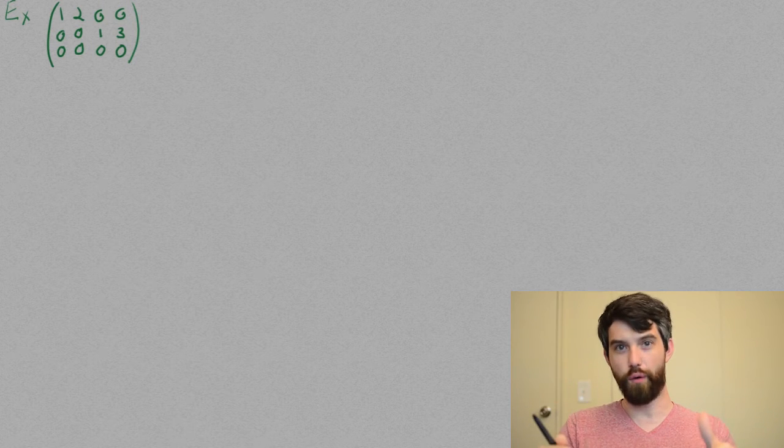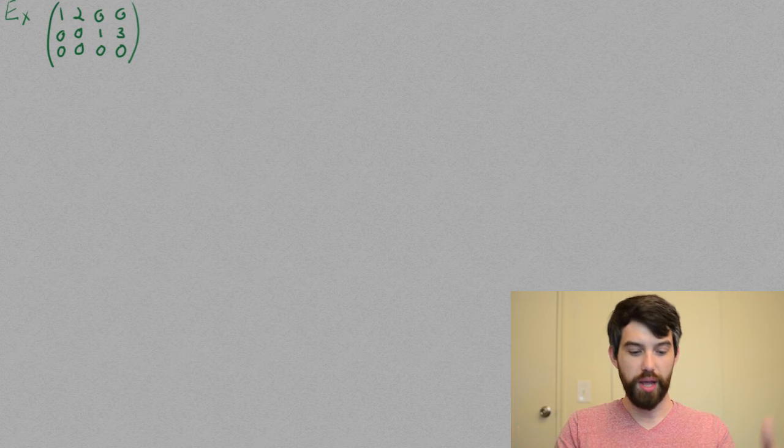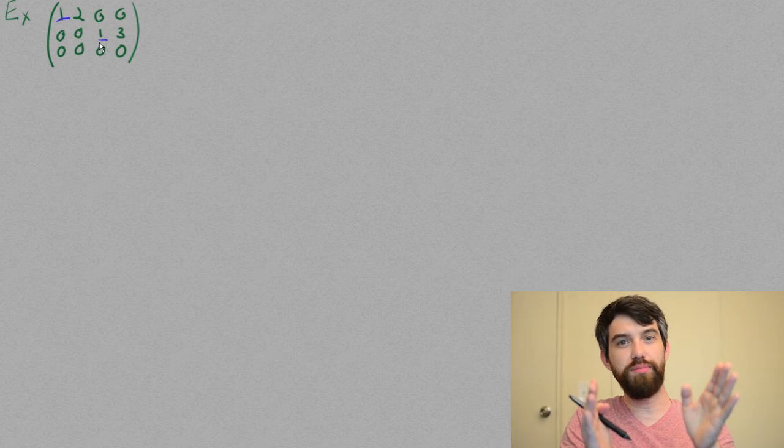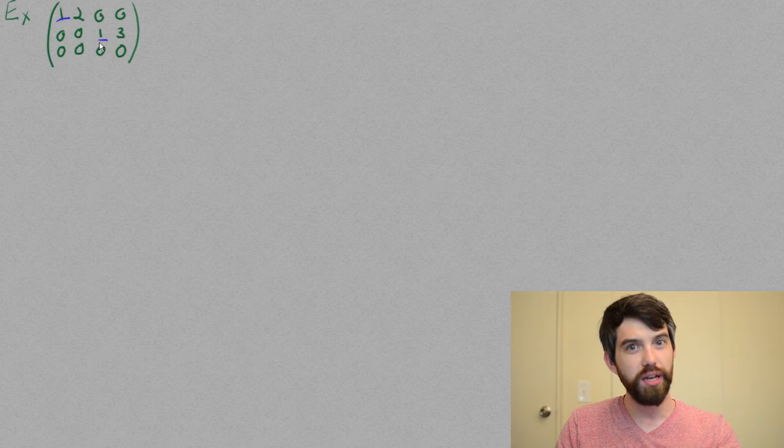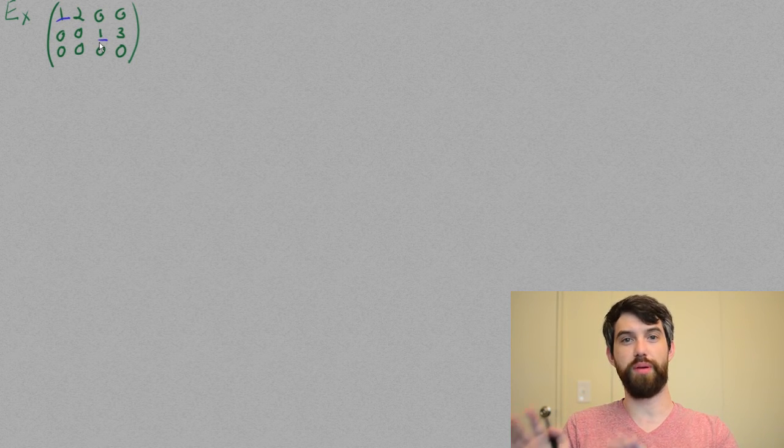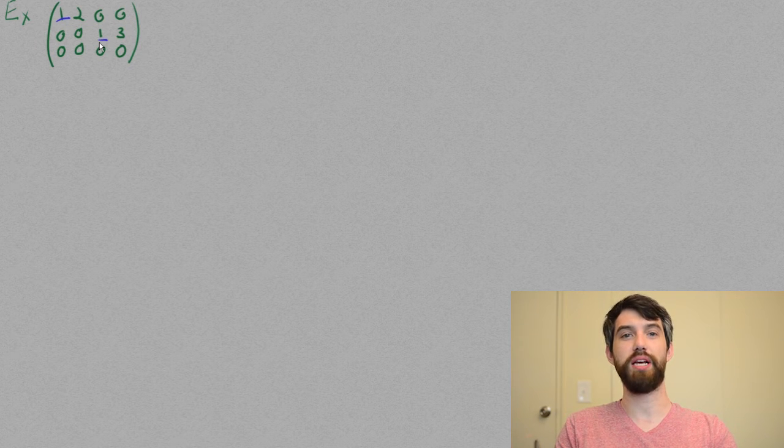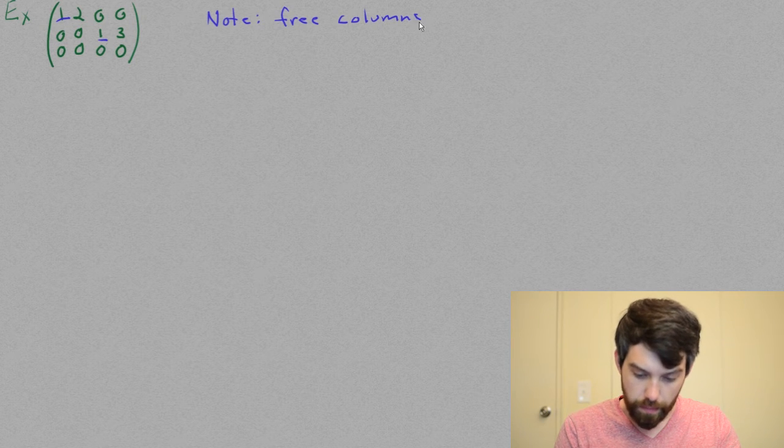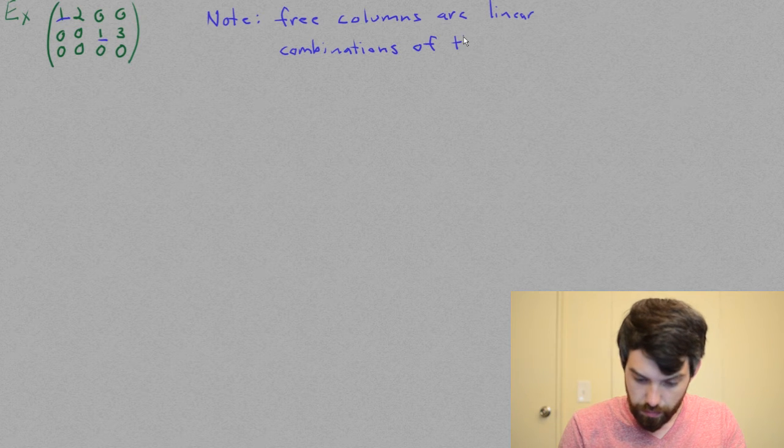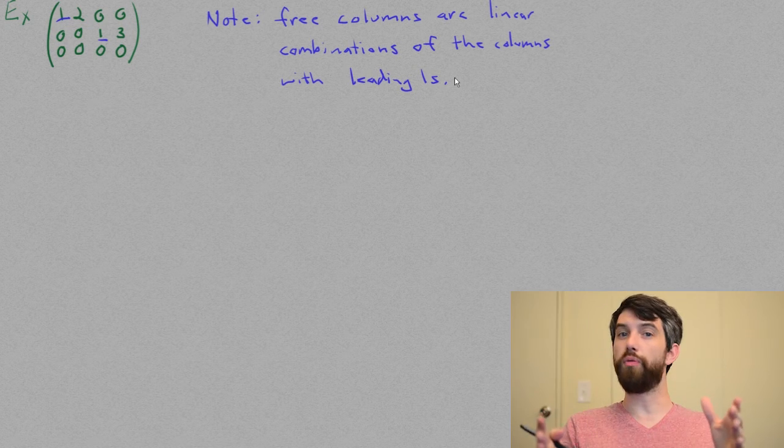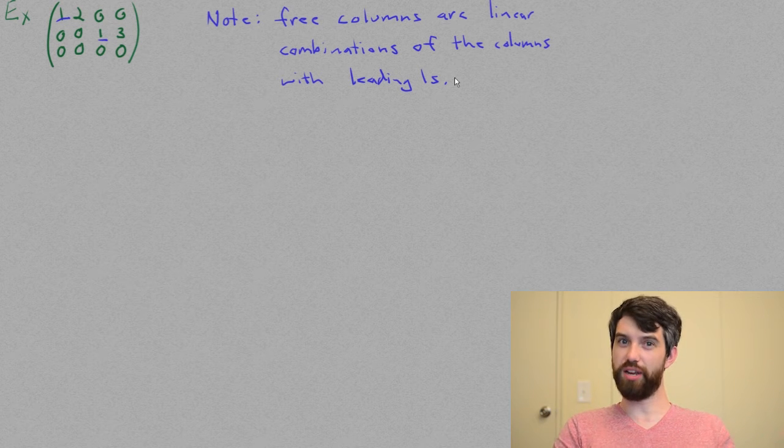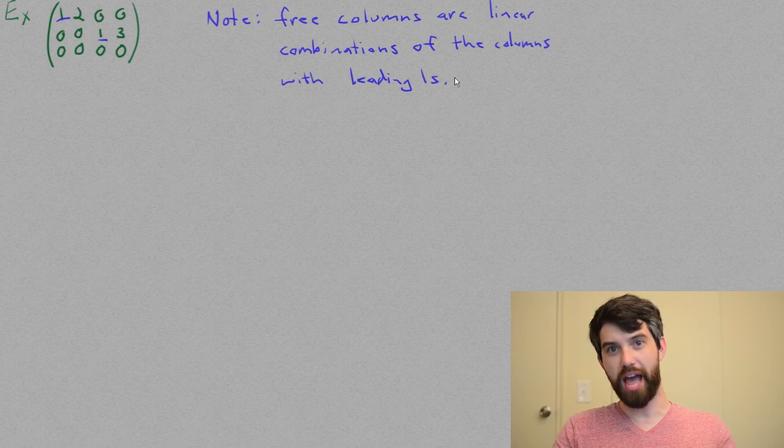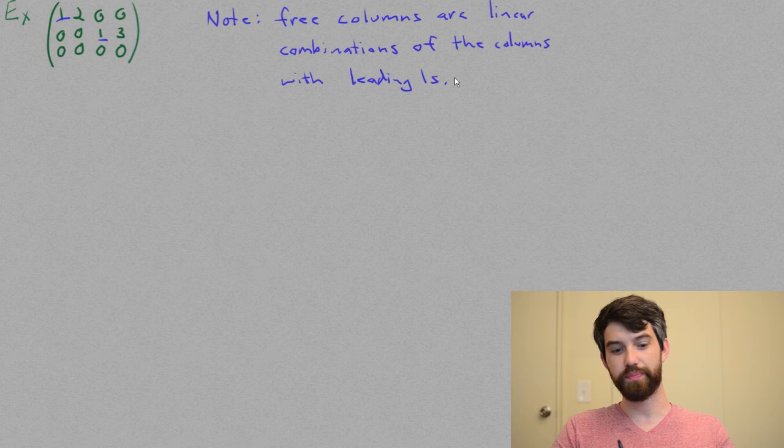If you have a matrix and it's in its reduced row echelon form, this is going to be generally true. What's interesting for us is the columns that have those leading ones. And then the columns that don't have leading ones, the free columns, those are always going to be just linear combinations of the columns with leading ones. Note that this is not just an artifact of our particular system. This is true in general. It is a theorem for all systems that have been put into the RREF via the Gaussian elimination process.